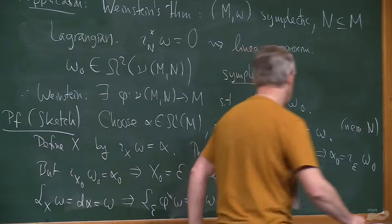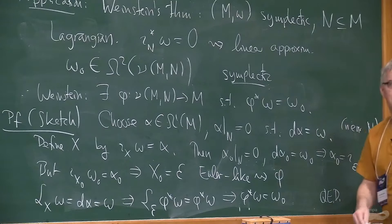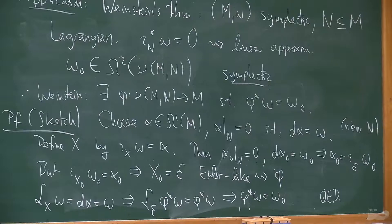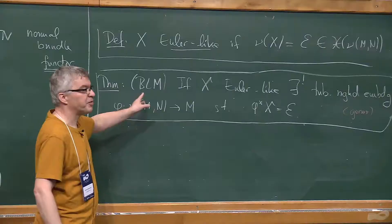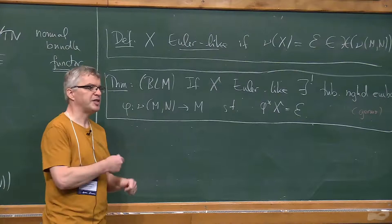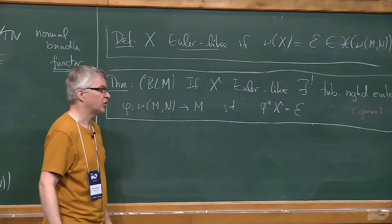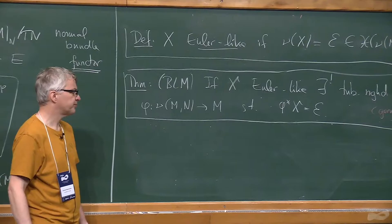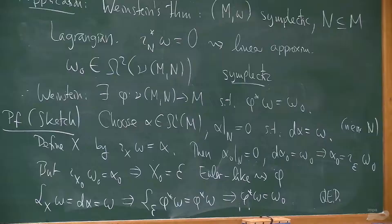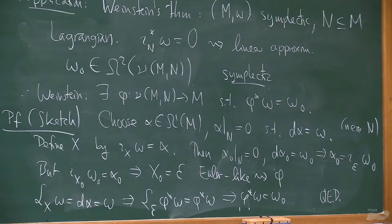You see it's basically the same idea as for the Morse lemma proof — you just need to find the right Euler-like vector field and then you're good. There are various other things you can do with this theorem. In our original papers we mostly used it to prove various splitting theorems: Weinstein splitting theorem, splitting theorem for Lie algebroids, and splitting theorems for all kinds of structures. One can also use it to prove Morse-Bott lemma, normal forms for clean intersections of submanifolds, and linearization of proper Lie group actions using the same technique.